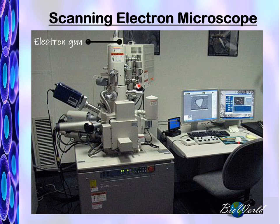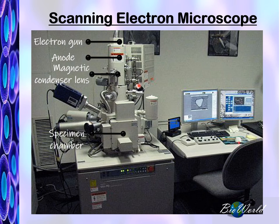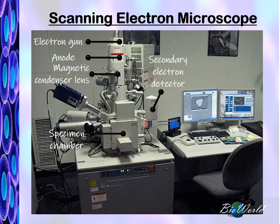It has the electron gun, the anode, the magnetic condenser lens, and the specimen chamber. But you can see there is no viewing display with the fluorescent plates. Instead, we have the secondary electron detector. But the computer screen is still here too. Now that we've identified the parts of the scanning electron microscope, let's look at how it functions.